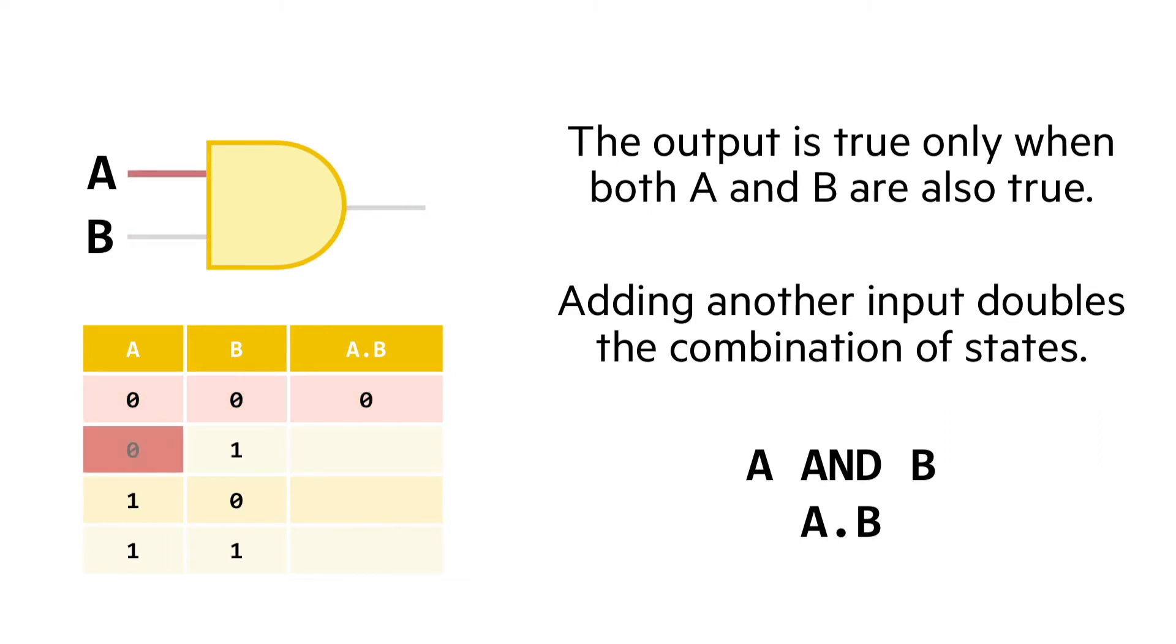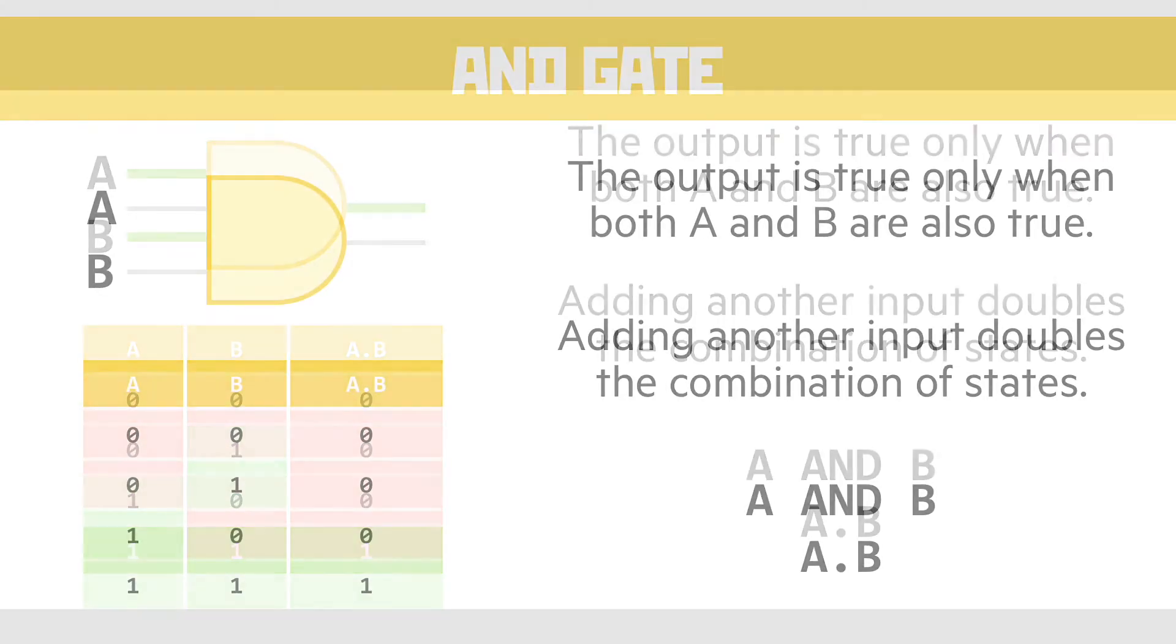Moving down, we have the situation where A is 0 and B is 1. In an AND gate, this gives us a 0 output again, because only one of the inputs is true, and we're looking for both of them to be. Our third state is where A is 1 and B is 0, the opposite of the previous state. And again, this gives us a 0 output, because only one of the inputs, not both, is true. Finally, we get to the state where both the input values are 1. This is the only time we get an output of 1. So the only way to turn this output on is to also turn on both the inputs.